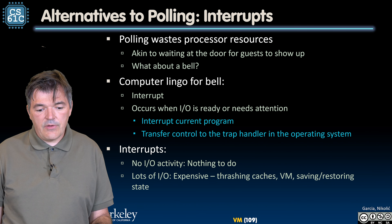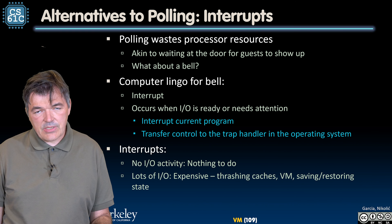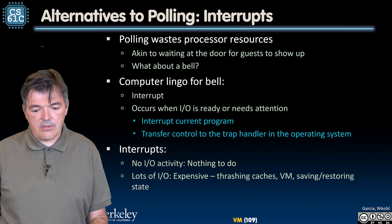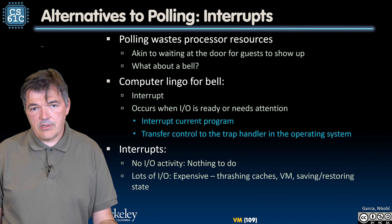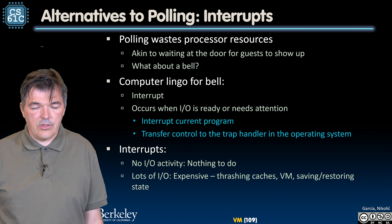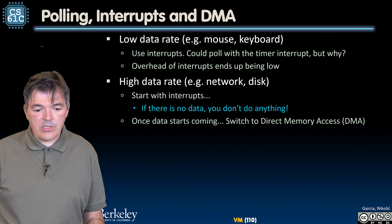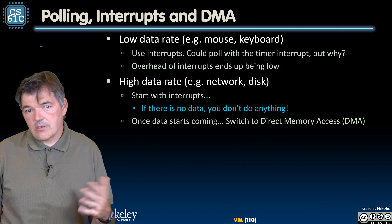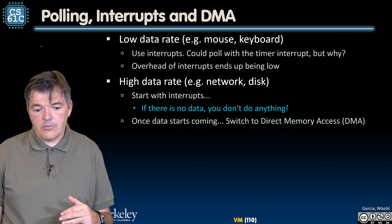However, if the device has a lot of I/O, interrupts are expensive because they interrupt the current program, trash the caches, trash the TLBs, and require saving and restoring state, then warming up caches again. So they are not ideal in that scenario. Generally, interrupts are fine for low-rate devices and are preferred over polling. Mice, keyboards, and similar devices will use interrupts.